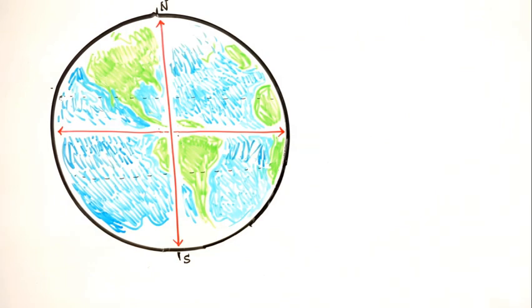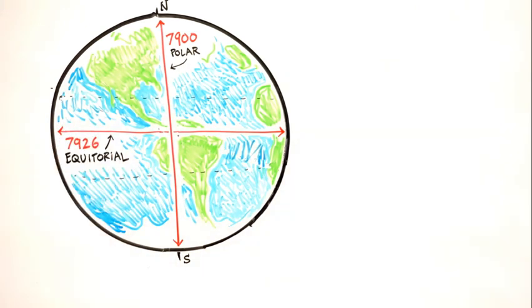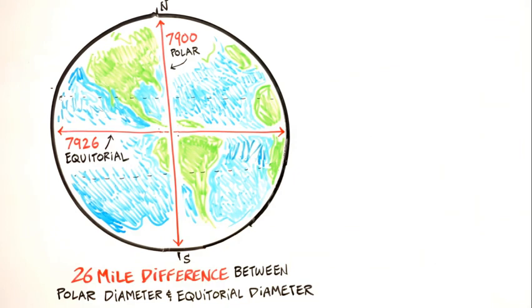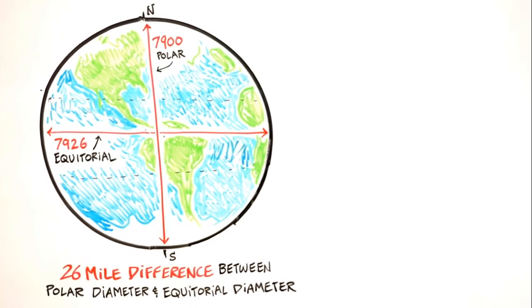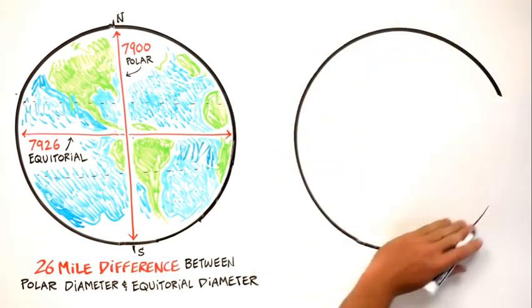And again, because of the spinning of the Earth on its axis, we have this difference between the polar diameter, 7,899, or just think in round numbers, 7,900 miles, and the equatorial diameter, 7,926. So that creates a 26-mile difference. And thank you for that 26-mile difference, because life on Earth would be a very chaotic affair without that bulge.